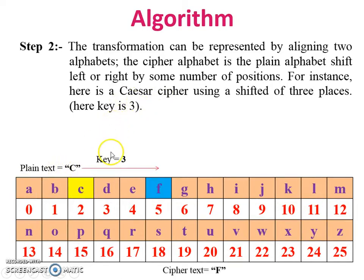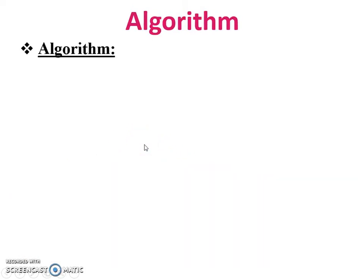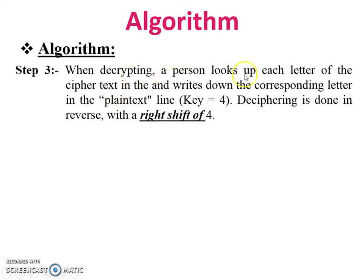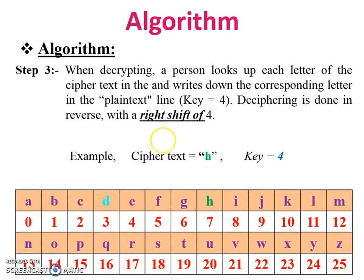The transformation can be represented by shifting the cipher alphabet left or right by some number of positions. For instance, using the table where A = 0 up to Z = 25: if the plaintext is C and the key is 3, then we encrypt the letter C with key 3. The generated ciphertext is F. This is the encryption process.